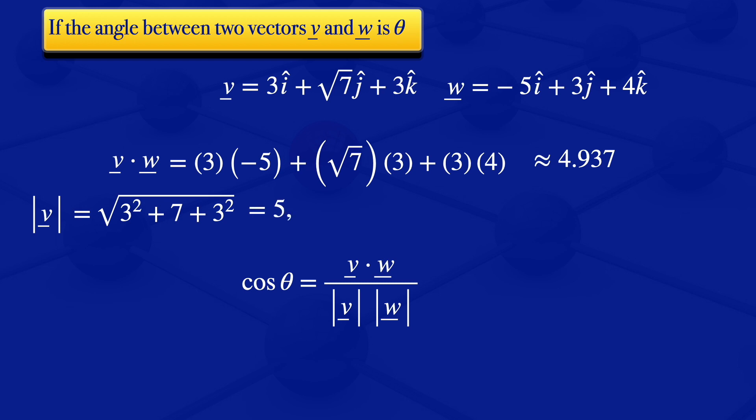For the norm of W, we square these elements, add them, take the square root. So the norm of W is the square root of 5 squared plus 3 squared plus 4 squared, which gives us 5 root 2.